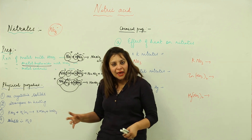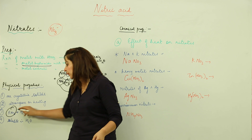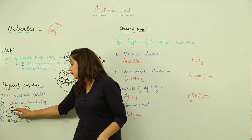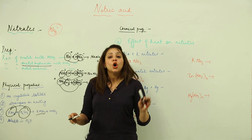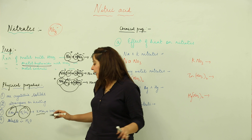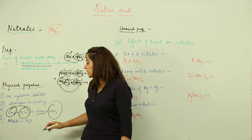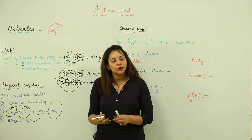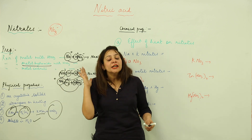Third, we can recover HNO3 by reacting any metal nitrate with sulfuric acid. The metal reacts with SO4, giving potassium bisulfate or potassium sulfate, along with nitric acid. Additionally, metal nitrates are soluble in water.